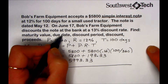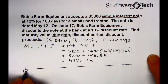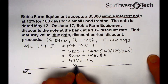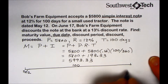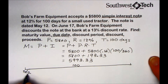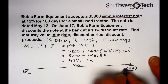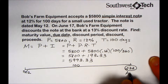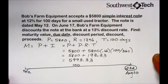The next question asks us for the due date. This loan was taken out on May 12th and is 100 days long. Looking up the day of the year for May 12th and adding 100 to it, that translates into the 232nd day of the year — in other words, August 20th. So the due date is August 20th.